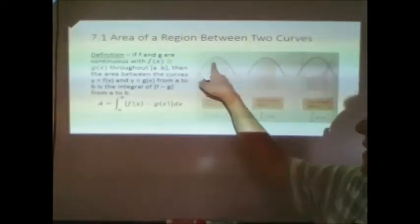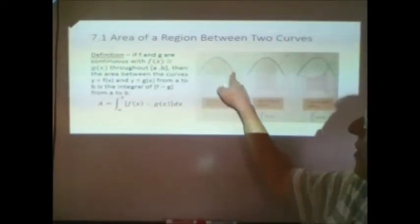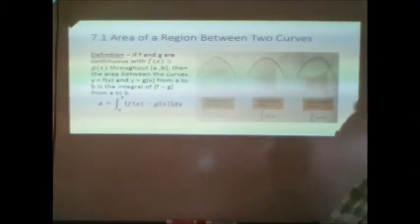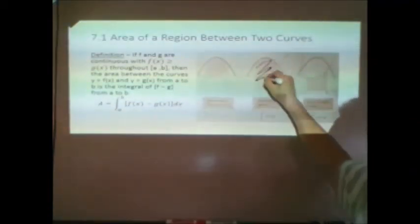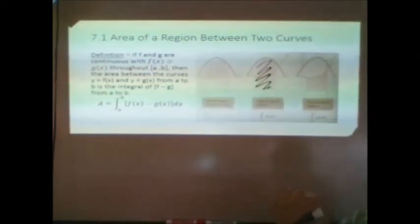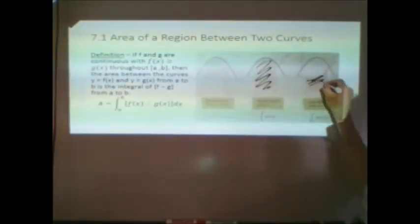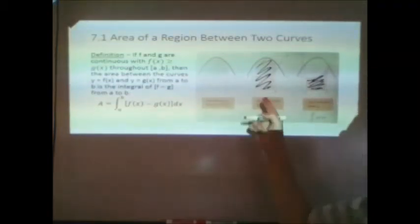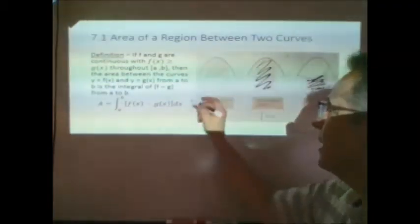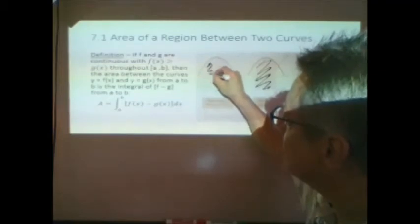If we wanted to find the area between f of x and g of x, if we integrate from a to b of f of x, we'll get that area. And if we integrate from a to b of g of x, we'll get that area. And if we subtract those two areas, we'll get the area between the curves.